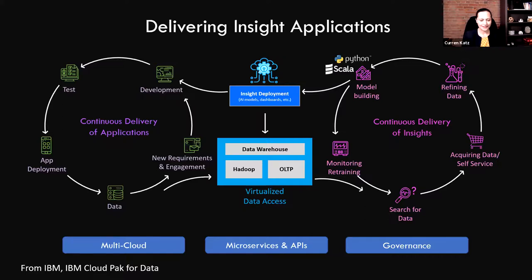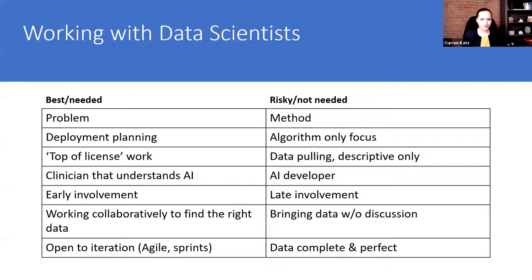I appreciate IBM's lifecycle here. I normally see these as a single cycle, but it's important to understand where different teams going into building AI at scale interact with each other. That cycle did not include exactly a physician–data scientist cycle, so that might be something for IBM to add someday. I wanted to talk about a couple of things I've noticed that work or are risky when working with data scientists.